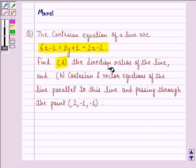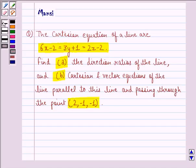Find (a) the direction ratios of the line, and (b) Cartesian and vector equations of the line parallel to this line and passing through the point (2, -1, -1).